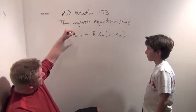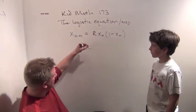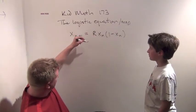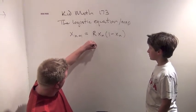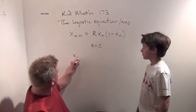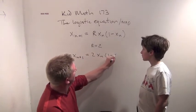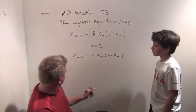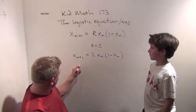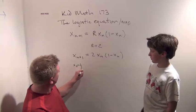What this is saying is we're going to start with some number. Let's pick a number, a half. And let's just say r equals 2 for some reason. So our equation becomes x sub n plus 1 equals 2 times x sub n times 1 minus x sub n.